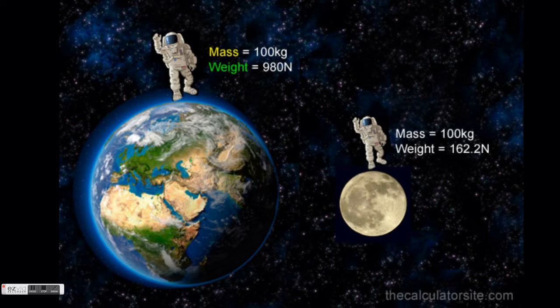This astronaut has a mass of 100 kilograms on Earth, and 100 kilograms on the Moon. There is less gravity on the Moon, but the astronaut still has the same amount of atoms in his body, so his mass does not change.